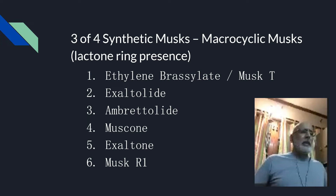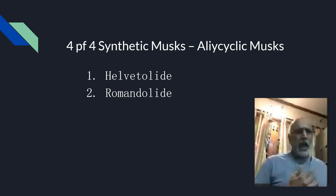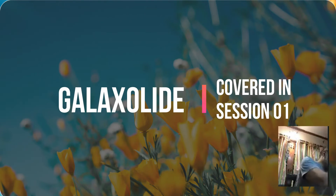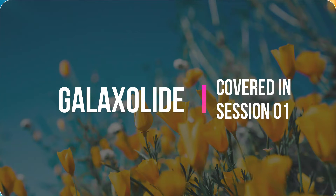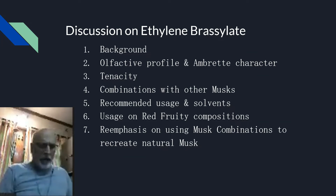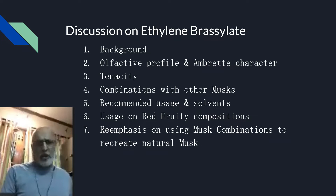The fourth class in the musk family is alicyclic musk — two raw materials come to mind: helvitolide and romandolide. So, if you consider musk — nitro musk is not possible to use. We are left with polycyclic musk, macrocyclic musk and alicyclic musk. Today we will see in detail ethylene brasilate, also called musk T. The classical macrocyclic musk was first identified somewhere in the 1920s. It is purely a product of synthetic organic chemistry — it is not found in nature.